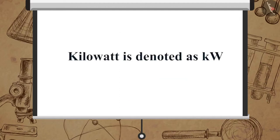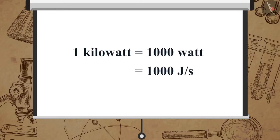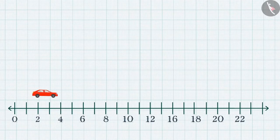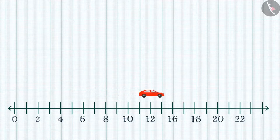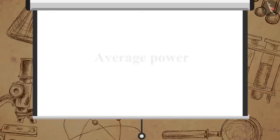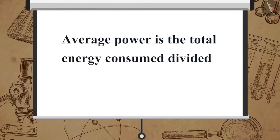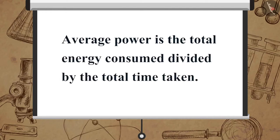A bigger unit of power is Kilowatt, denoted as kW. 1 Kilowatt = 1000 Watt = 1000 Joule per second. Power may vary with time — the rate of doing work may be different at different time intervals. Thus the concept of average power becomes helpful. Average power is the total energy consumed divided by the total time taken.